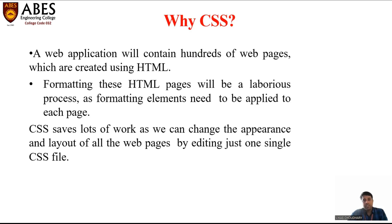Another question is: why do we use CSS? CSS is used to solve a very big problem, because before CSS, tags like font, color, background, styles, elements, alignments, borders, and size had to be repeated on every page. This was a very long process. Using Cascading Style Sheets avoids that long and expensive process of repeating the same tags one by one.